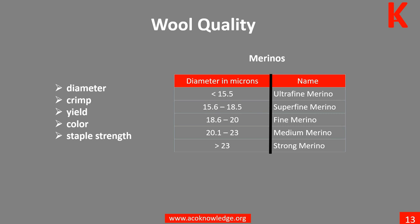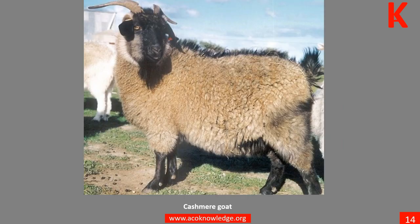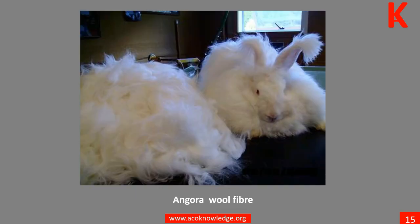Cashmere is collected during the spring molting season, when the goats naturally shed their winter coat. Learn more in Unit 4. The down hairs of the angora rabbit are 60 millimeters long and very smooth with few cuticle scales.